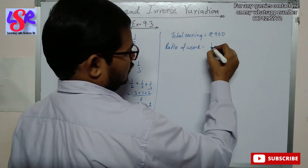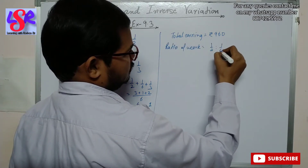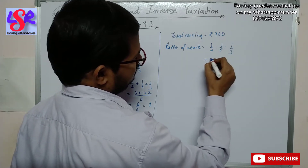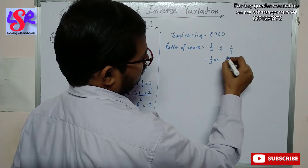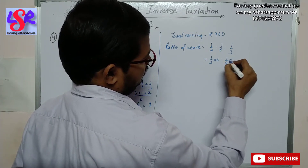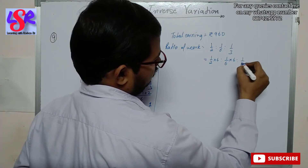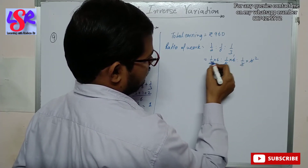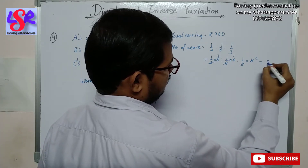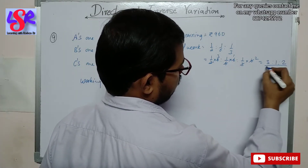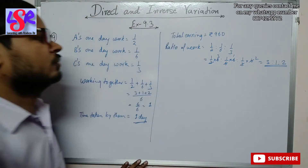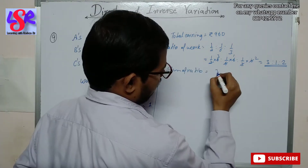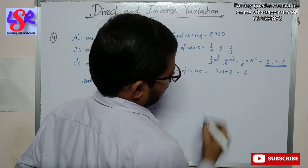The ratio of the work done is 1 upon 2 : 1 upon 6 : 1 upon 3. Multiplying each by the LCM of 6, this gives us 3 : 1 : 2 as the ratio of work done by A, B and C respectively. So the sum of the ratio is 3 plus 1 plus 2 that is equals to 6.